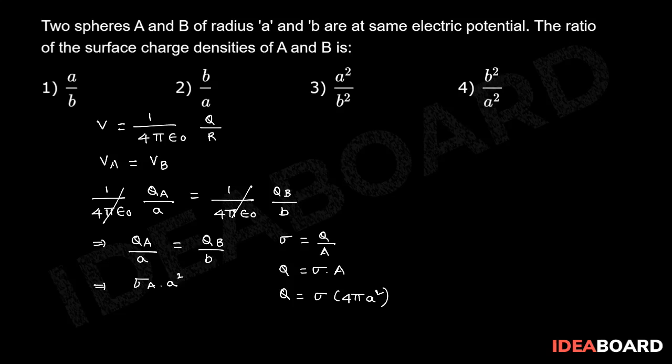But 4 pi get cancelled both sides. By A equal to qB, sigma B into B square by B. 4 pi get cancelled both sides.